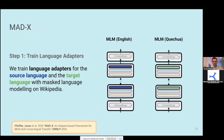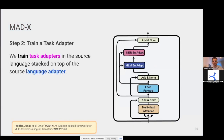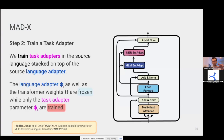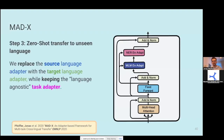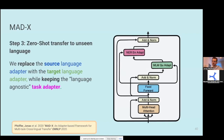MAD-X consists of multiple steps. In step one, we train language adapters on monolingual corpora using masked language modeling — fine-tuning blue adapters on English and in parallel training language adapters on the target language, for example Quechua. In step two, we train a task adapter stacked on top of the output of the language adapter. During training, we freeze not only the pre-trained weights but also the pre-trained language adapter, only fine-tuning the task adapter on the target task. In step three, we can replace the source language adapter (English) with the target language adapter (Quechua) to perform zero-shot inference, reusing the task adapter that was trained only on English data.